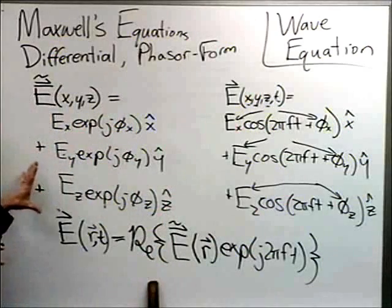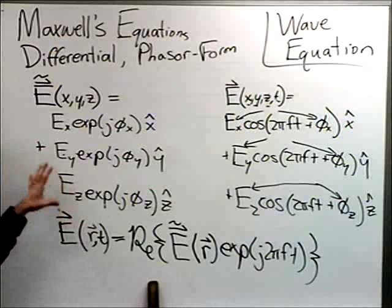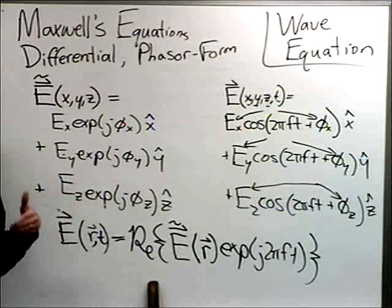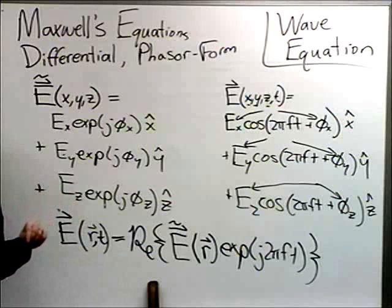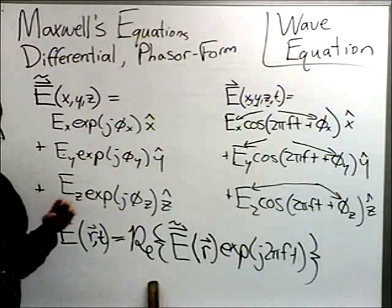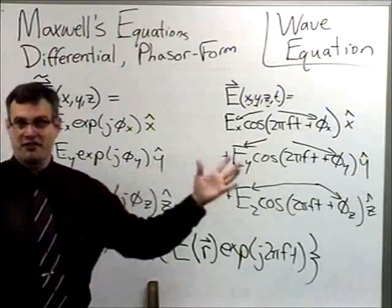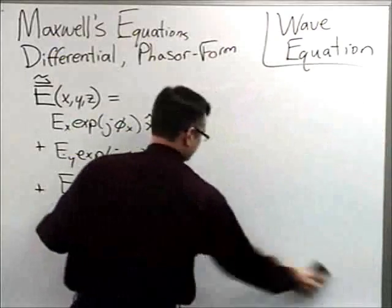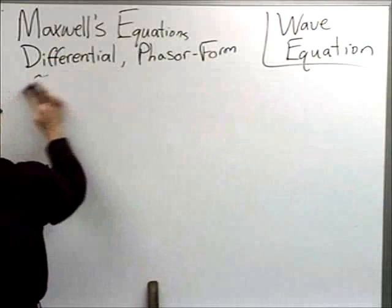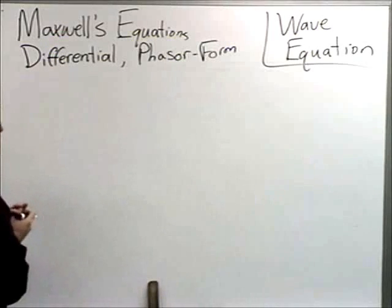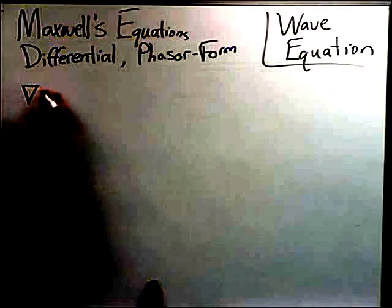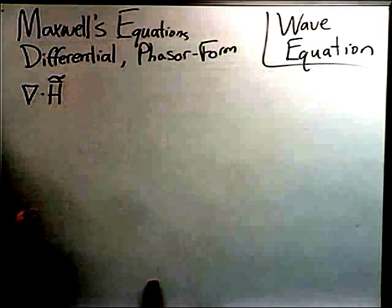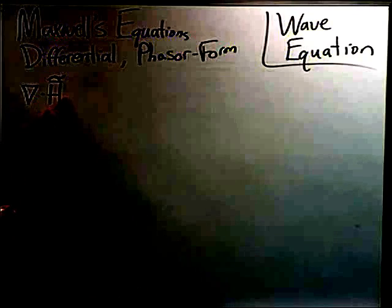Now I'll take this definition and convert the differential form of Maxwell's equations into phasor form. Starting with Ampere's Law — the modified Ampere's Law — the curl of H̃, which is only a function of x, y, z (converted to phasor domain, denoted with a tilde), must equal J̃ plus the time derivative of the electric flux density.